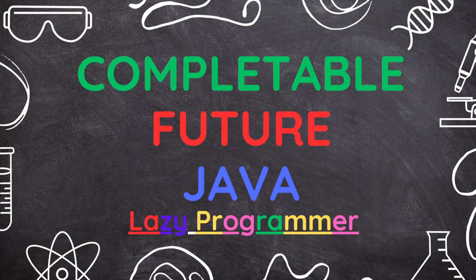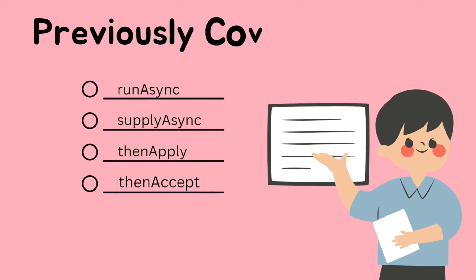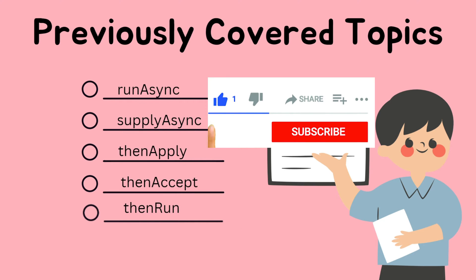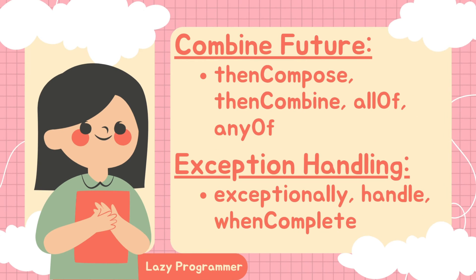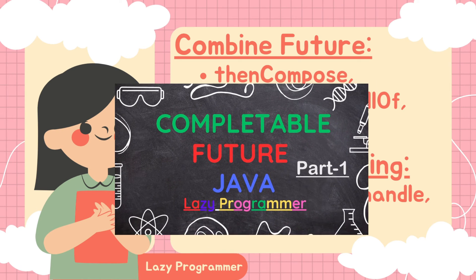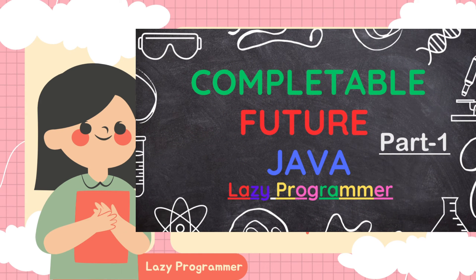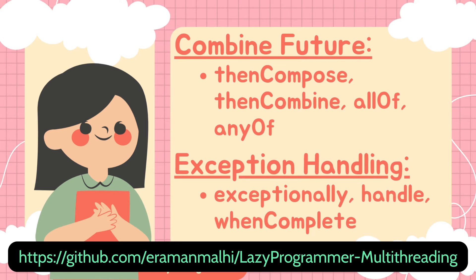Hello everyone and welcome back. In our previous video, we have already seen how we can run tasks asynchronously using CompletableFuture. In this video, we will see how we can combine different futures for different use cases with the help of these functionalities. Also, we will see how we can effectively handle exceptions in CompletableFuture. If you have not yet watched the first video, I would recommend you to watch it to get the basic understanding. Link is given on the top right corner of your screen. You can also find complete code of these topics on GitHub. Link is given below.